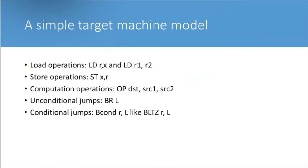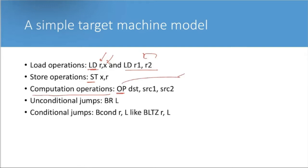A simple target machine model: load operation given by LD — R is a register, M is a variable stored in memory. It can also load R1 from R2, meaning register to register. Store operation is given by ST. Computation operations are given by OP — add, multiply, divide, subtract. Unconditional jump is given by BR (branching), and there is also conditional jump.